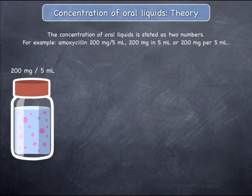The concentration of oral liquids is stated as two numbers. For this example, we will consider amoxicillin oral liquid, 200 mg in 5 mLs, which can also be stated as 200 mg per 5 mLs.